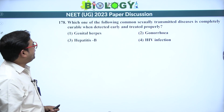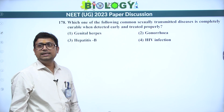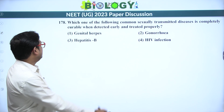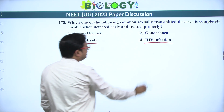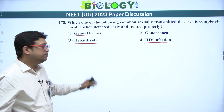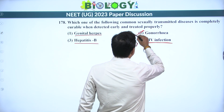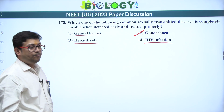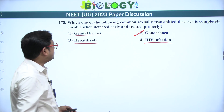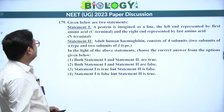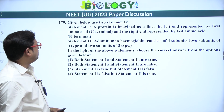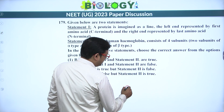Next: which sexually transmitted disease is completely curable when detected and treated early? Genital herpes, hepatitis B, and HIV are viral infections — viral STDs cannot be cured. Gonorrhea is caused by Neisseria gonorrhoeae, a bacterium. If detected early and treated properly, it can be completely cured. Answer is the second option.